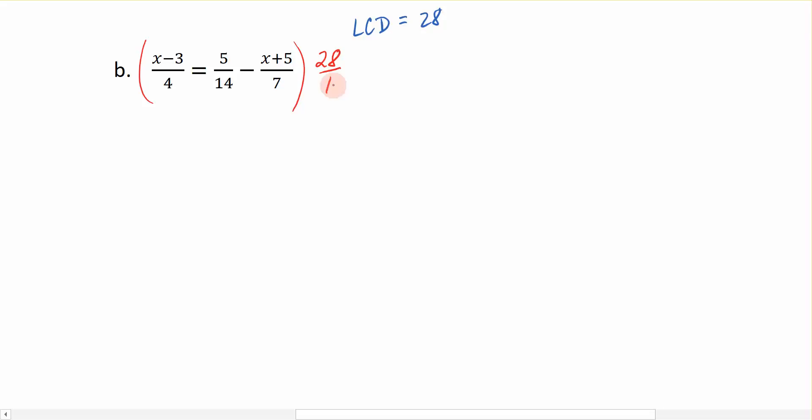So I encourage you to write this as 28 over 1 whenever you're multiplying by fractions. So, the first term on the left, this is going to be 28 over 1 times x minus 3 over 4. That's equal to 28 over 1 times 5 fourteenths minus 28 over 1 times x plus 5 over 7. So I have three separate multiplication problems going on here, and they're all multiplying fractions.